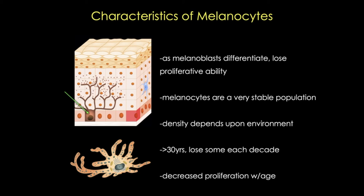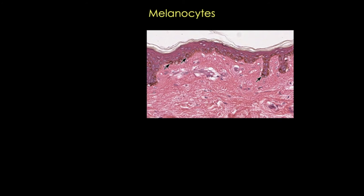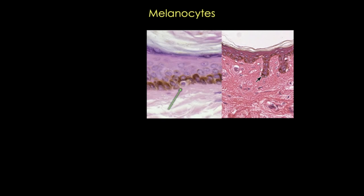Here's an H&E stained section showing melanocytes in the basal cell layer of the epidermis, marked with black arrows. Note that these are pretty histologically inconspicuous cells. In the magnified version, you can see that the cell is kind of oval or fusiform. These are actually dendritic cells, meaning they have filipodia or dendrites—extensions that you can't really see in an H&E stain. These cells are often smaller than keratinocytes.